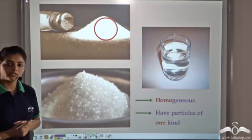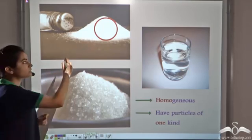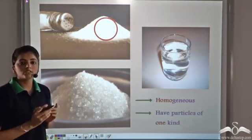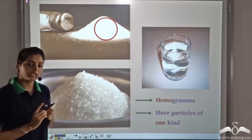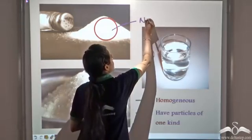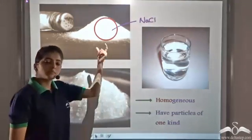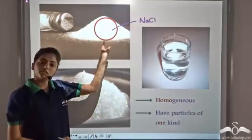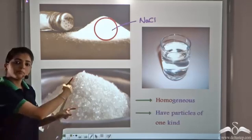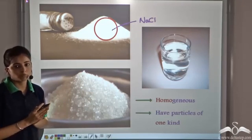Let's look at some other cases. We have salt. When you observe salt, you see that it looks the same throughout. So this is homogeneous and it is constituted of only one kind of particles — molecules, which is the NaCl molecule. So similar molecules make up this salt. Similarly, sugar has the same composition throughout and it is constituted of similar sugar molecules.